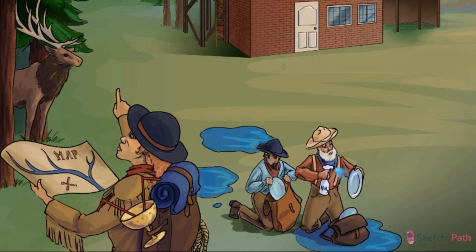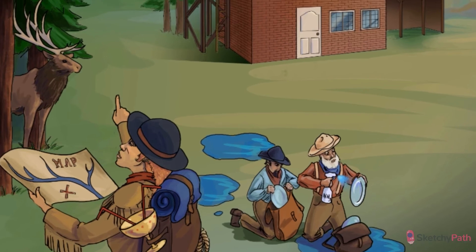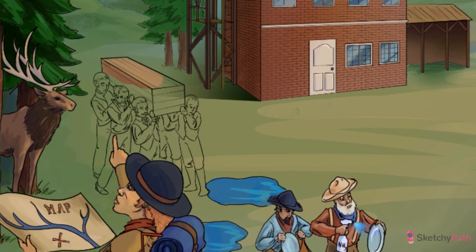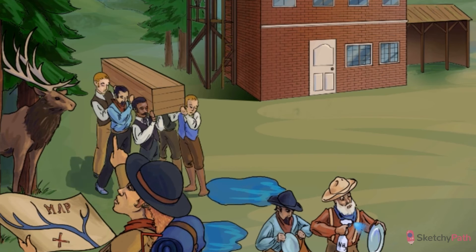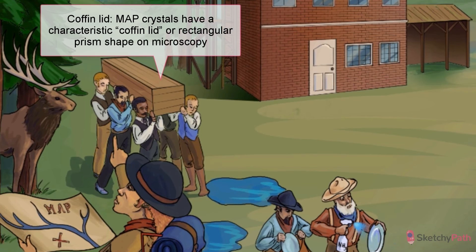Some stones can grow rapidly over weeks to months, forming staghorn calculi so large that surgical removal is required. Antibiotics are also added to treat the underlying infection. Struvite stones are readily diagnosable by the signs and symptoms of a UTI, a urinalysis consistent with upper UTI, and the characteristic coffin lid or rectangular prism appearance of crystals on microscopy.